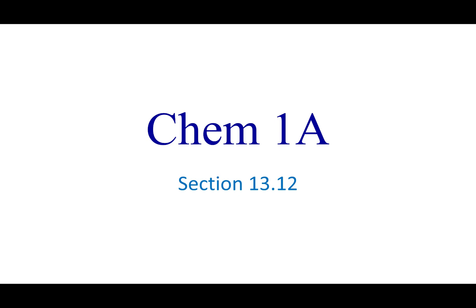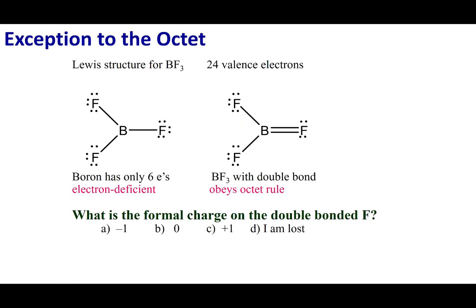Welcome to section 13.12. In this lecture, we're going to discuss exceptions to the octet rule. The first one we want to discuss are compounds that are electron deficient, which means they will have less than eight electrons around one single atom and will not complete the octet.